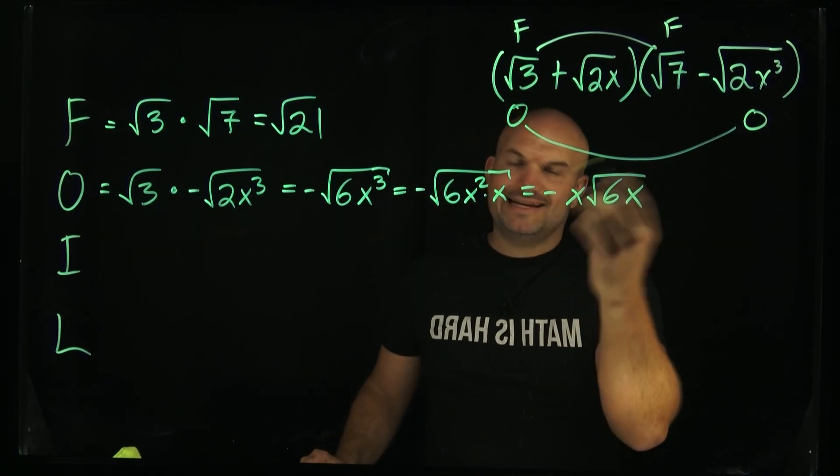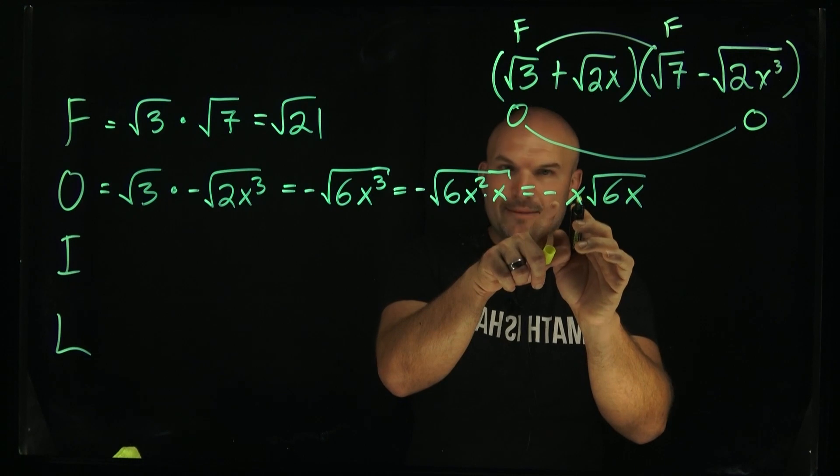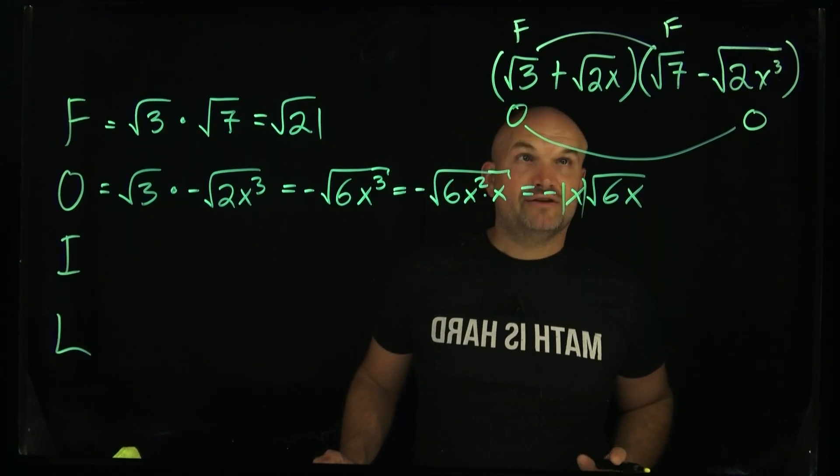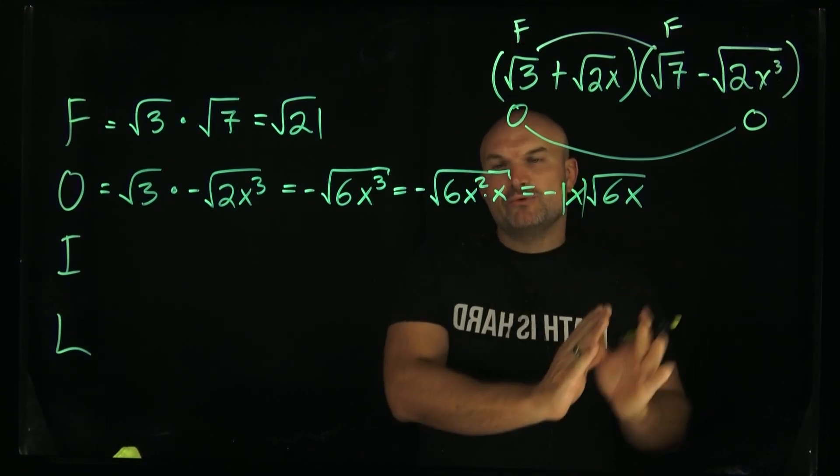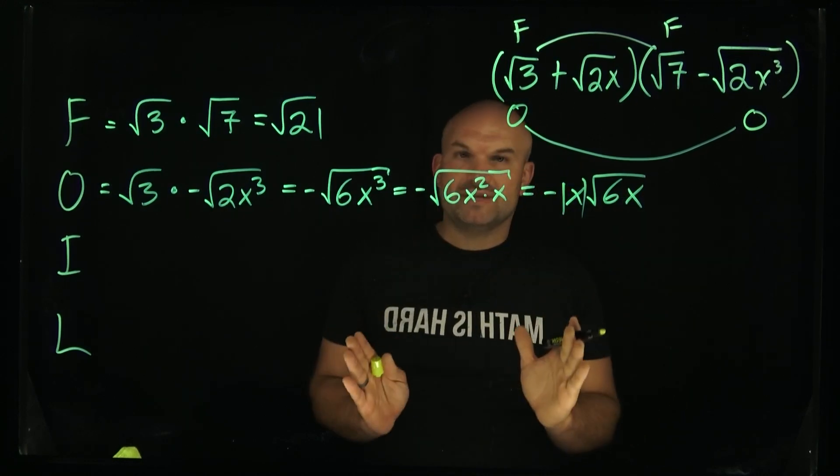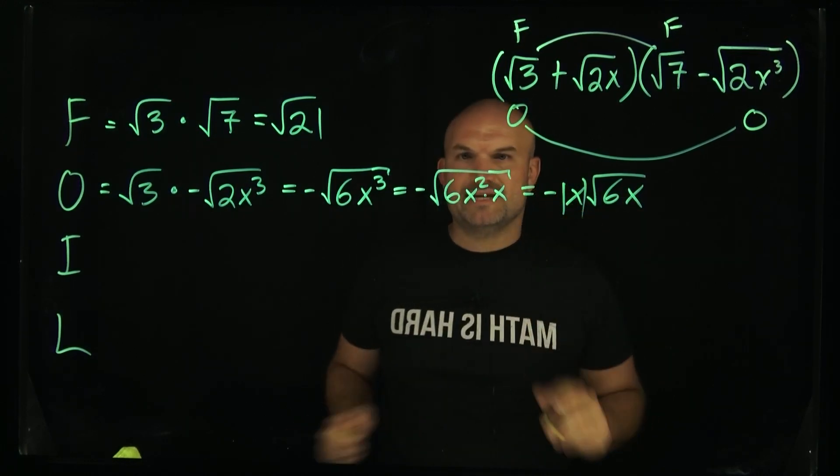We can also think about this as the absolute value of that, since it's going to be an odd power. Whenever you're taking the square root of an even value and you're left with an odd power, you're going to include that that is a positive version.